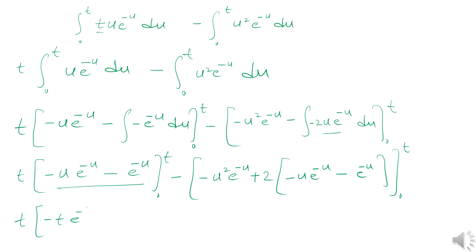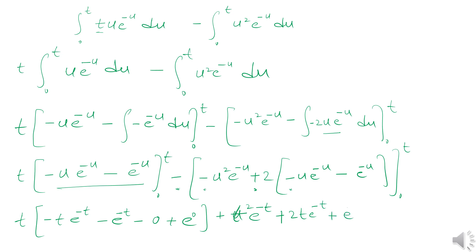Applying the limits, we get: negative t e to the power negative t minus e to the power negative t, then minus 0, then plus e to the power 0. After working through the signs, we get: t-squared e to the power negative t, plus 2t e to the power negative t, plus e to the power negative t, minus zero, minus negative e to the power zero.